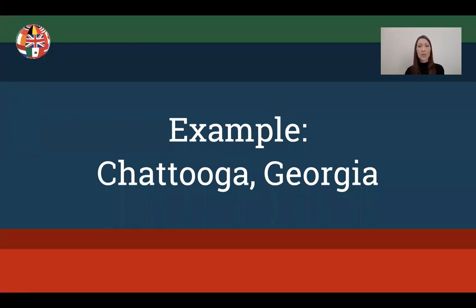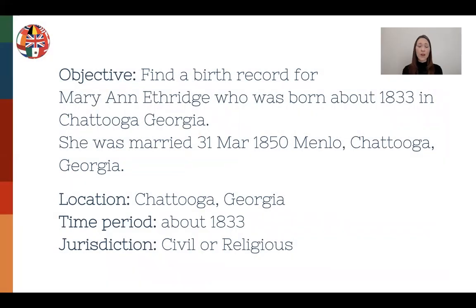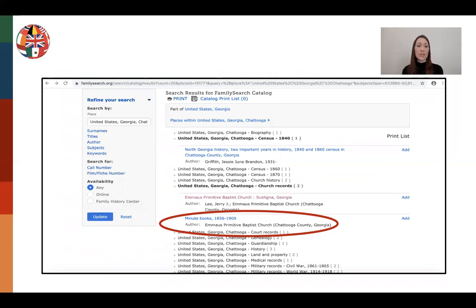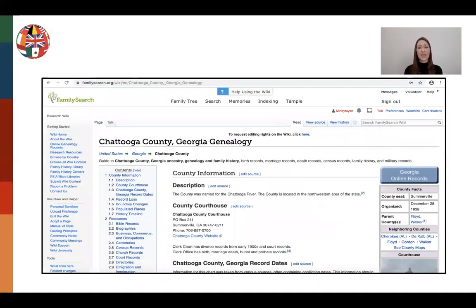Now the US example in Chattooga, Georgia. Our objective is to find a birth record for Marianne Etheridge, born in 1833 in Chattooga, Georgia. She was married 31st of March 1850 in Menlo, Chattooga, Georgia — we know this because we have her marriage record. The location is Chattooga, Georgia, time period about 1833. We don't know if we'll find a civil or religious record. I go to the FamilySearch Catalog and search for Chattooga, Georgia. Immediately under church records, there isn't anything dating to 1833, and census records only have 1840. So something's going on and I need to find out more.